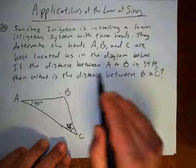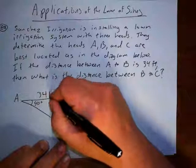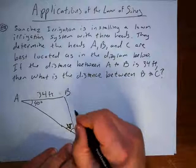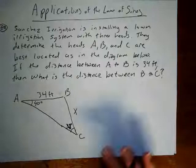And then it asks if the distance from A to B is 34 feet. Here. Then they want to know what's the distance from B to C. And so we'll put an X there. And they want to know what X is.